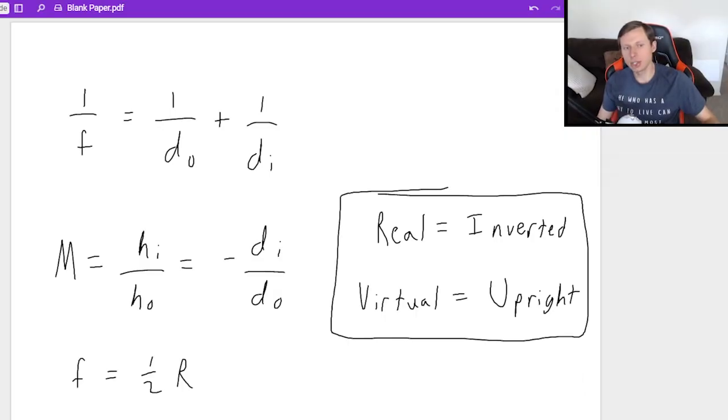The next equation is M, which is magnification, equal to the height of your image divided by the height of your object, which is also equal to negative image distance over object distance. And you'll see why the negative is there later on.